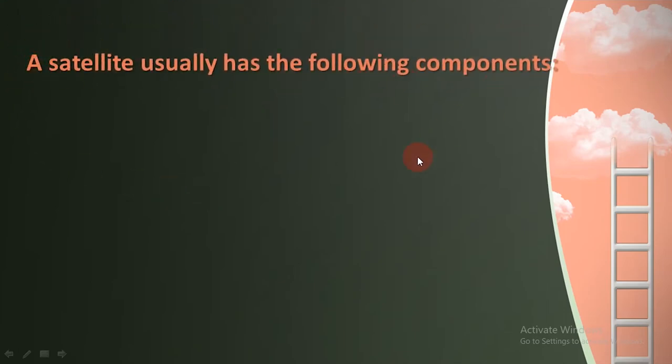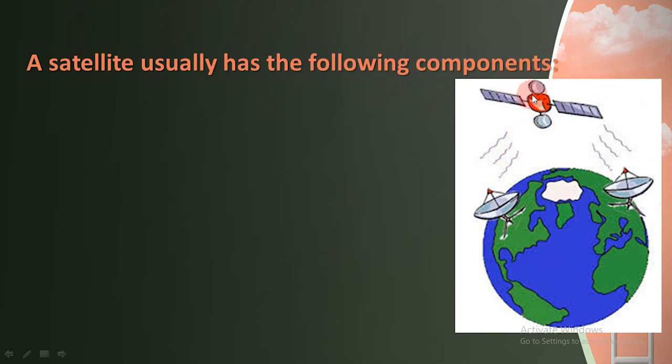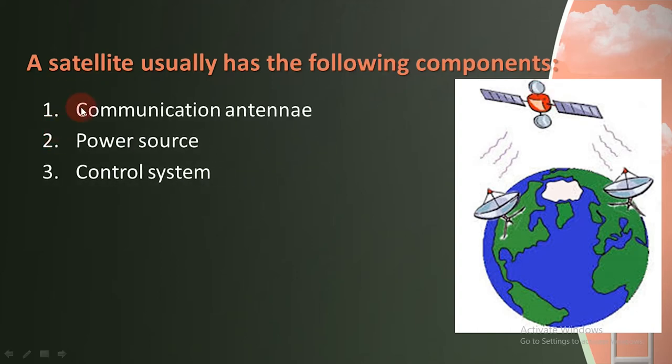A satellite usually has the following components. The satellite communicates with Earth. It sends and receives signals. Its functionality depends on its components. There are different components such as antennas, revolving wings, and a body which contains a power source and other settings. Its main features are communication antennas and power source.